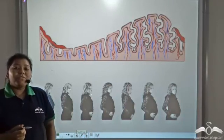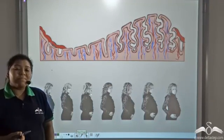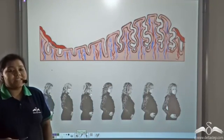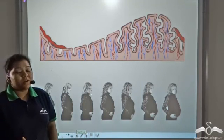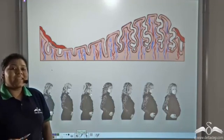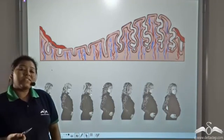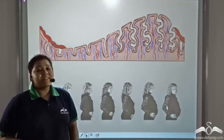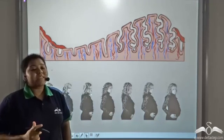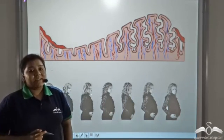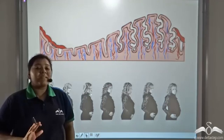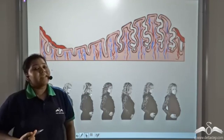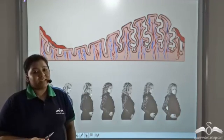When a female becomes pregnant — that is, the ovum gets fertilized by a sperm — the menstrual cycle stops happening. The endometrium layer is maintained and is not shed.